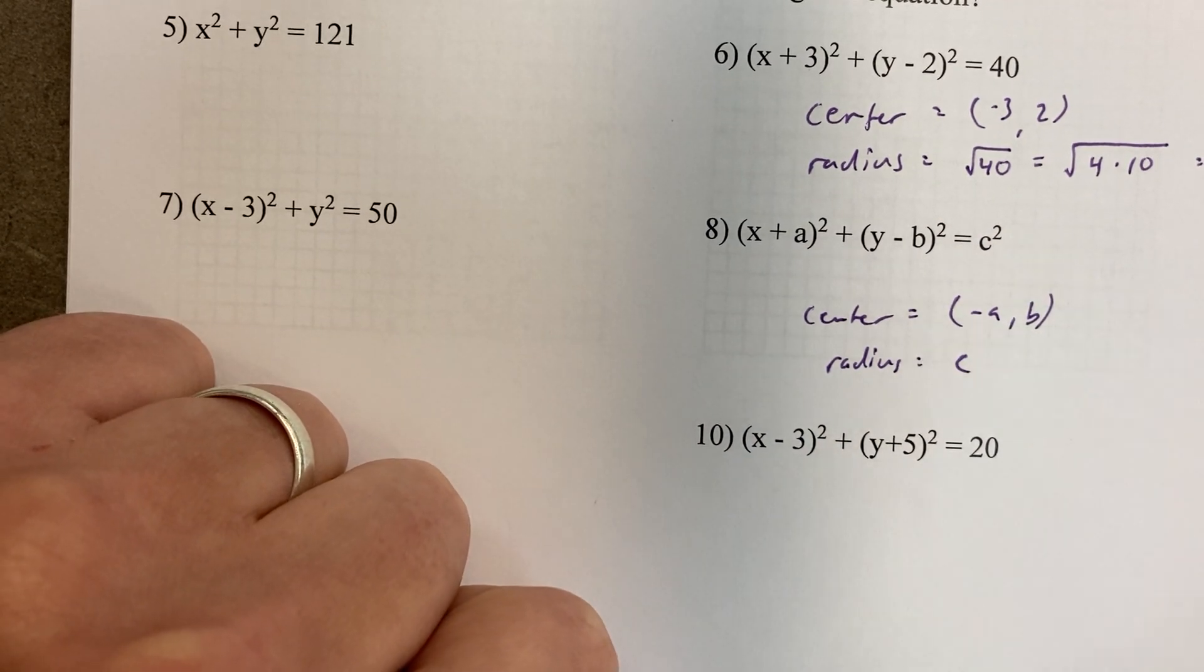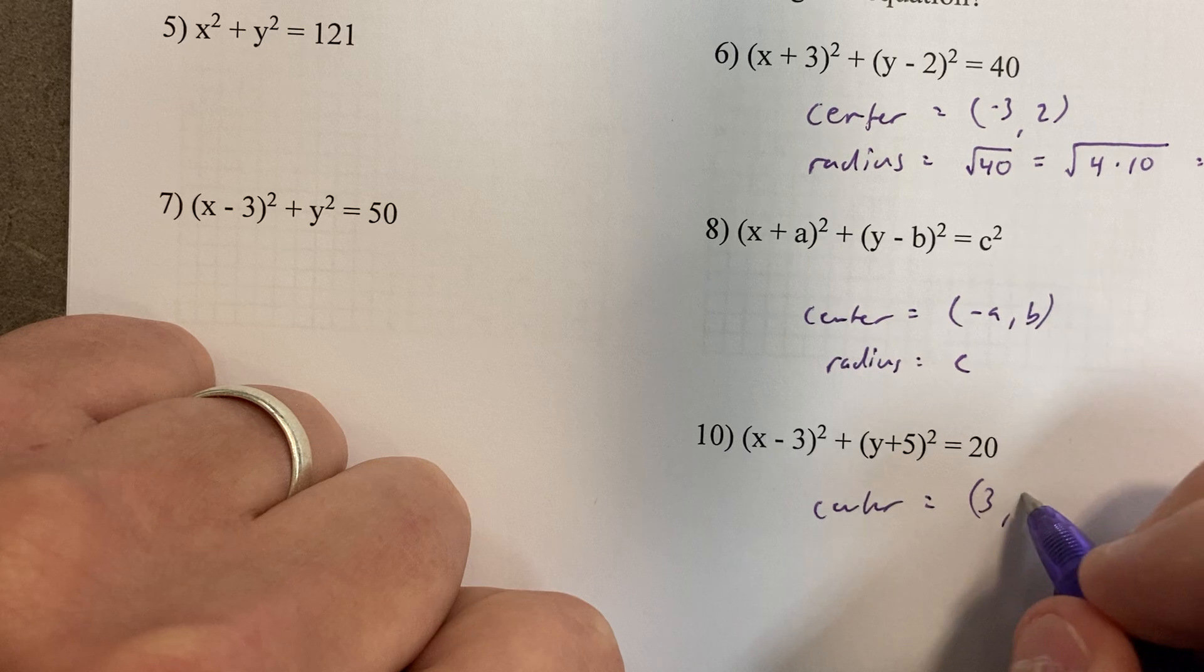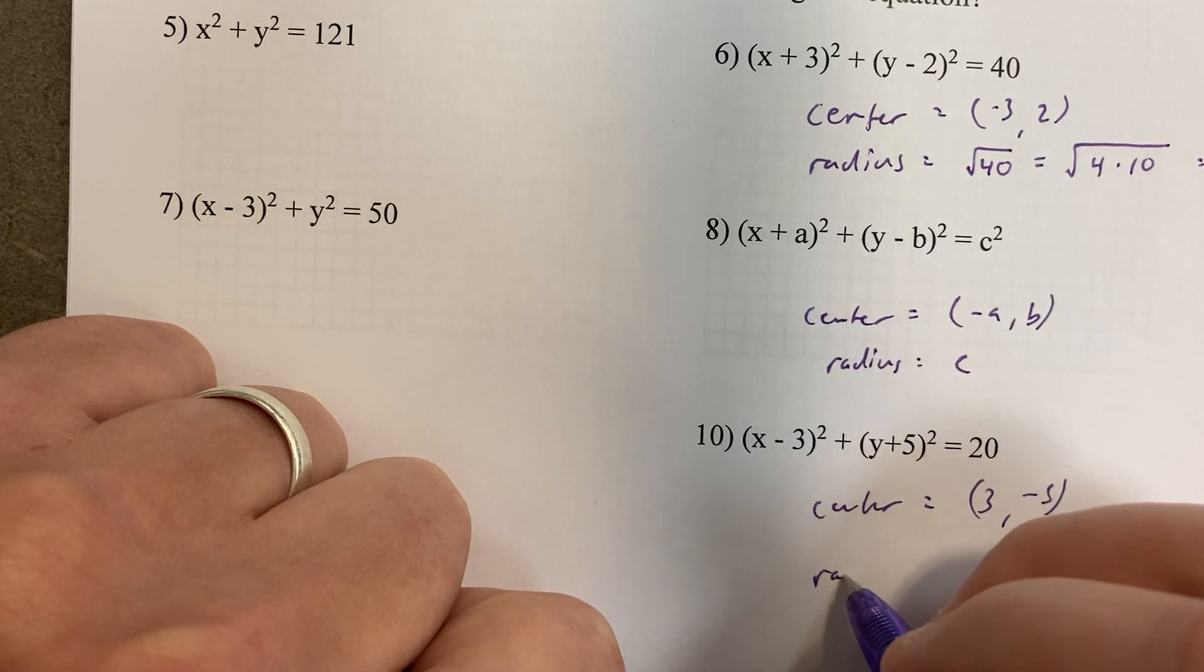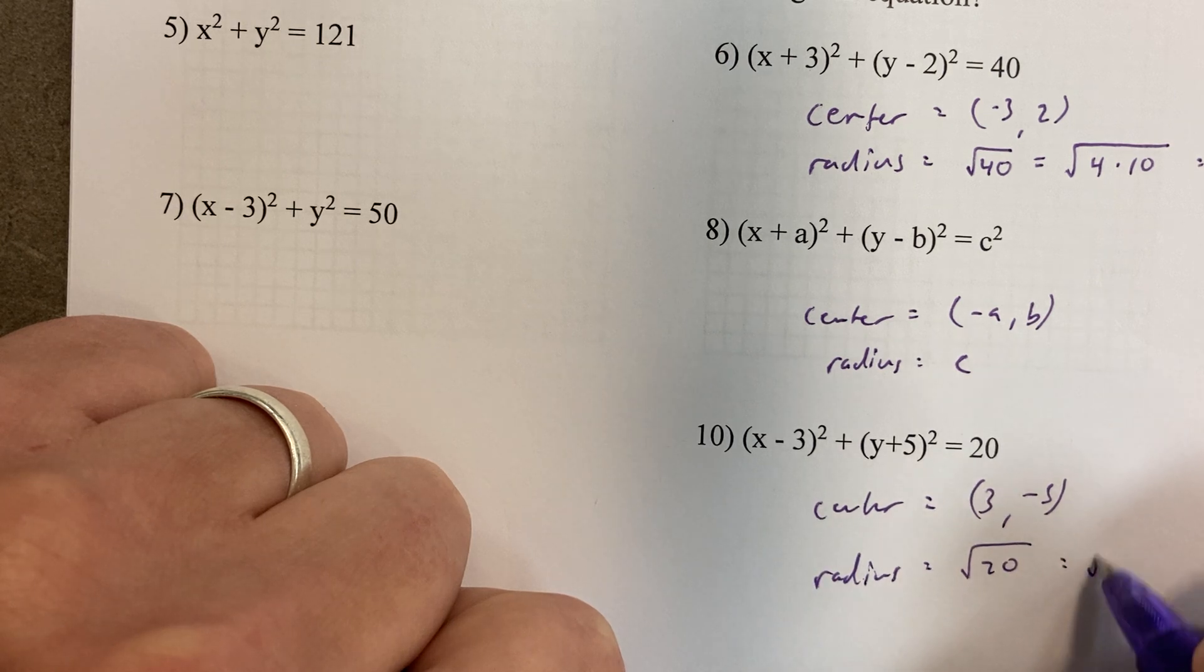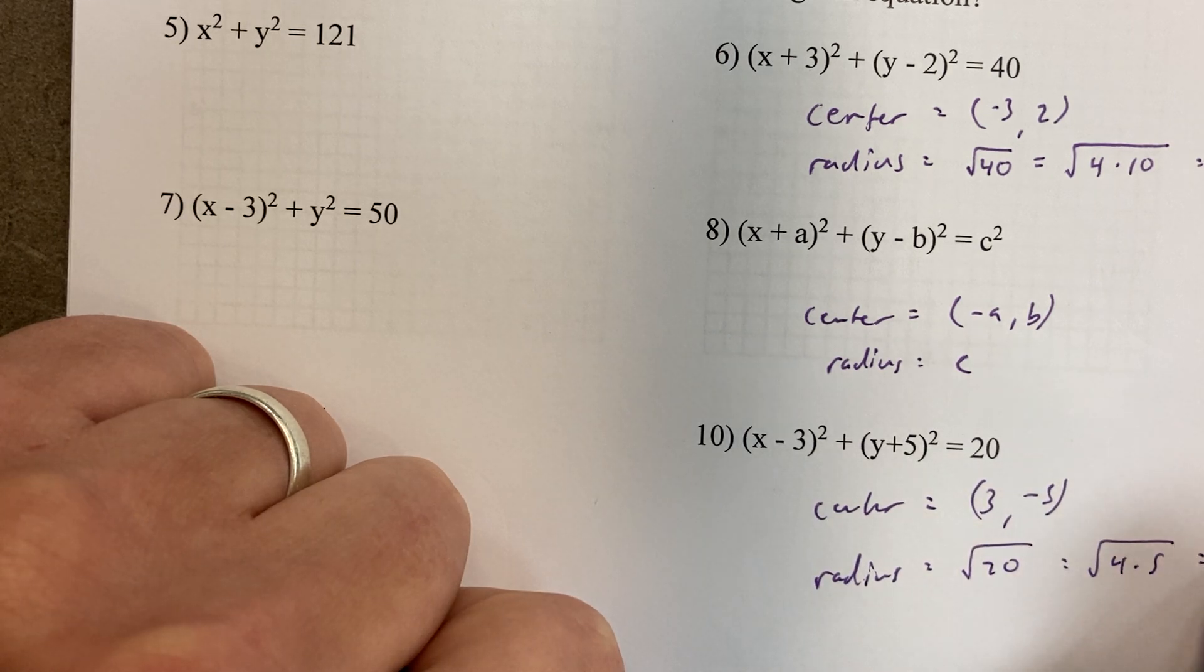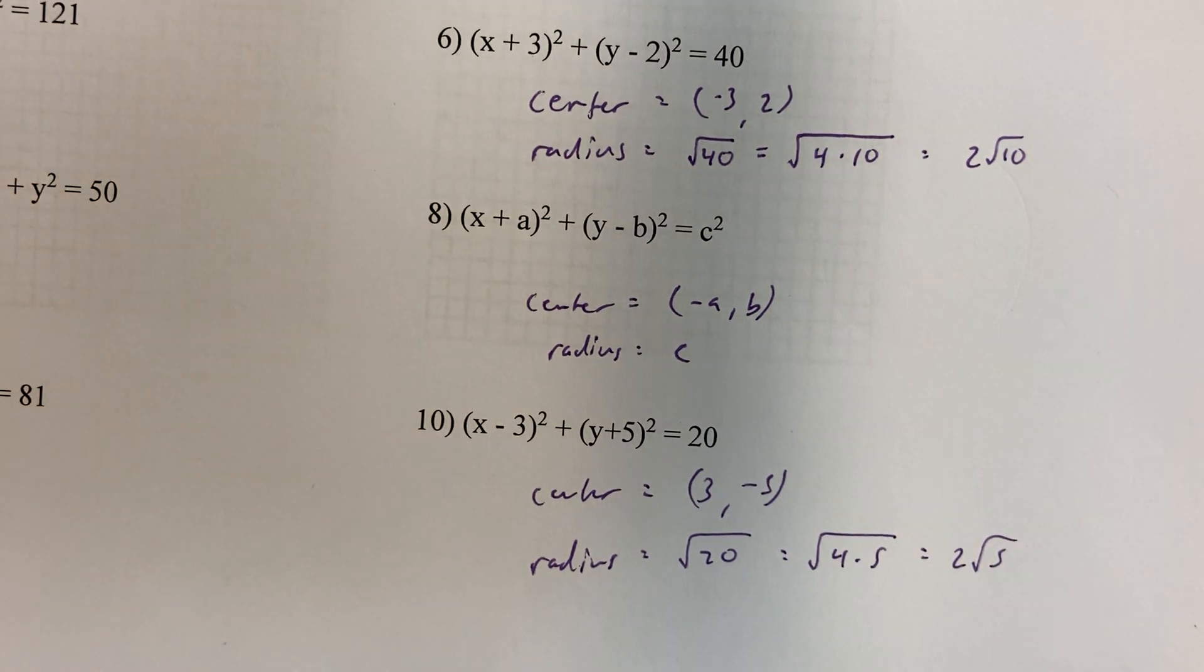Number 10. The center is (3, -5), and the radius is √20. Wow, that's pretty quick. Next.